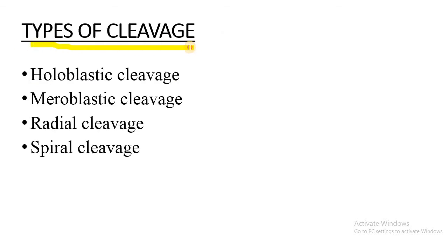We will now learn the different types of cleavage. Basically there are two main types: holoblastic cleavage and meroblastic cleavage. In the syllabus, radial and spiral cleavage are also listed separately — these are actually holoblastic radial cleavage and holoblastic spiral cleavage.